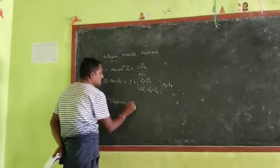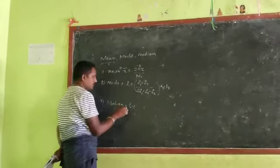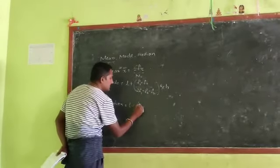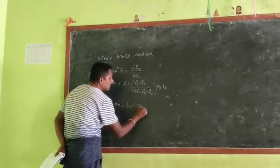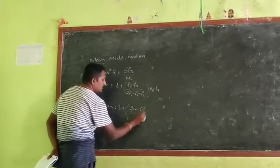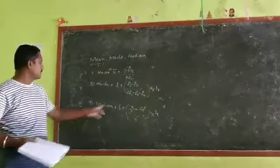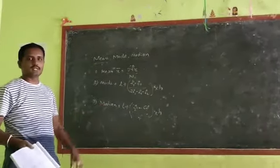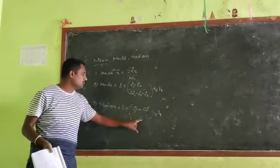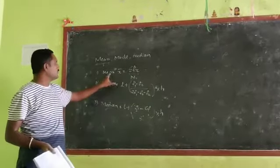Median is equal to L plus (n/2 - cf)/f × h, where L is the lower limit and cf is the cumulative frequency. These are the three formulas for finding the mean, mode, and median.